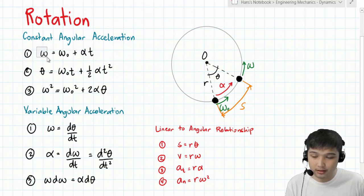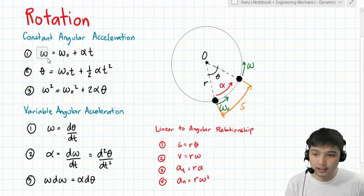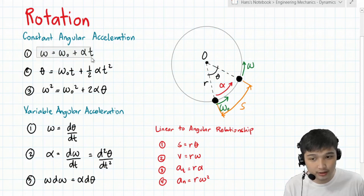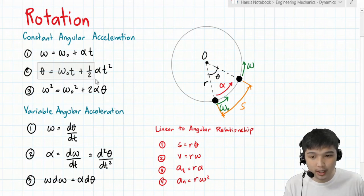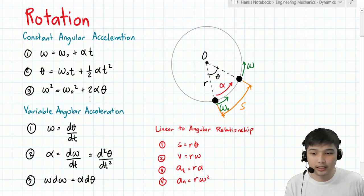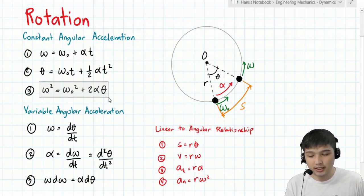The first equation: final angular velocity equals initial angular velocity plus angular acceleration times time t. The second: angular displacement theta equals initial angular velocity times t plus one-half angular acceleration times t squared. The third: final angular velocity squared equals initial angular velocity squared plus two times angular acceleration times angular displacement. Technically, these are the same as the rectilinear motion equations.